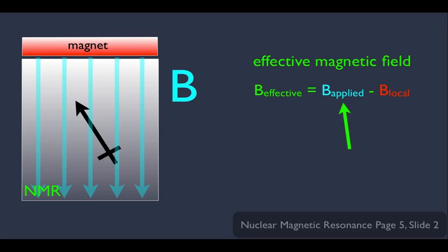First of all, B applied. What is that? Well, that's the B field that the NMR applies. And what is this in red here, this B local? That's the local magnetic field that surrounds the nuclei in the NMR. B effective is simply the magnetic field that affects the nuclei and what that's equal to is the applied magnetic field minus the local magnetic field.